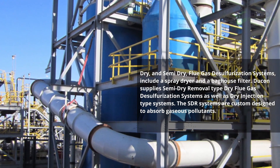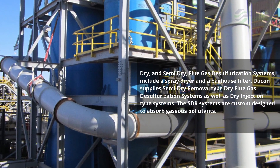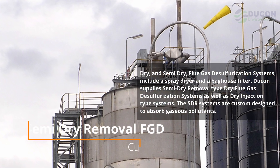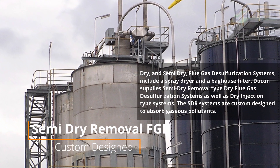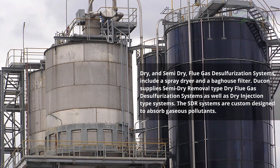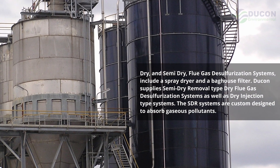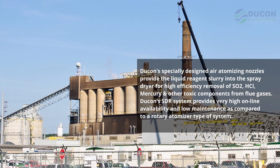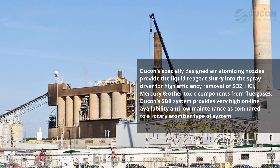Dry and semi-dry flue gas desulfurization systems include a spray dryer and a baghouse filter. Dukon supplies semi-dry removal type dry flue gas desulfurization systems as well as dry injection type systems. The SDR systems are custom designed to absorb gaseous pollutants. Dukon's specially designed air atomizing nozzles provide the liquid reagent slurry into the spray dryer.